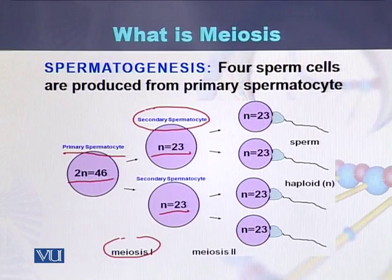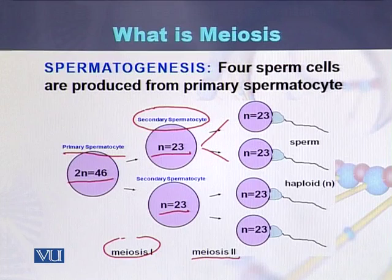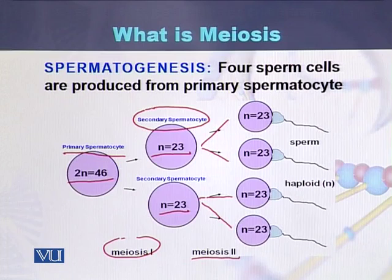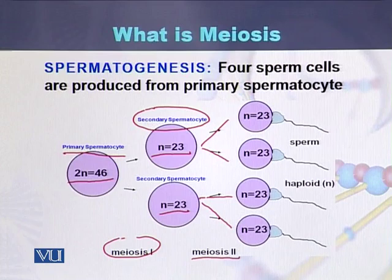As a result of meiosis 2, each cell again divides — this division is like mitosis. Each cell divides into 2 daughter cells, so altogether 1 cell produces 4 haploid cells. These haploid cells in the case of males are called sperms.